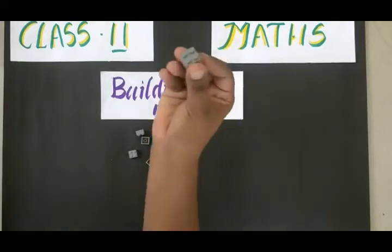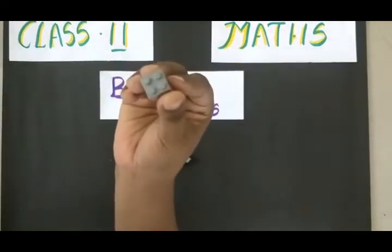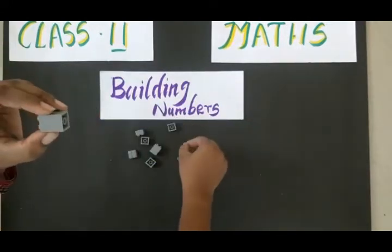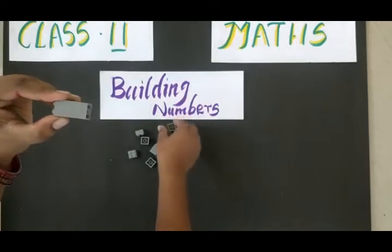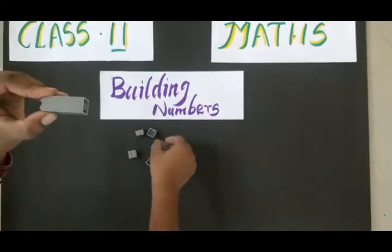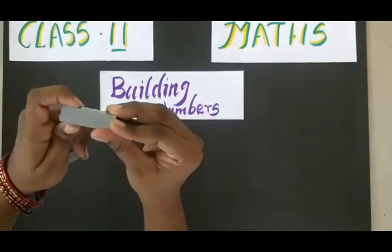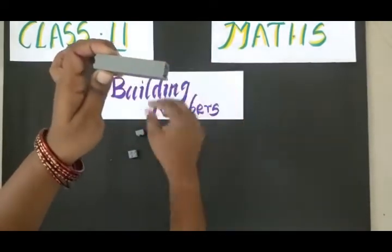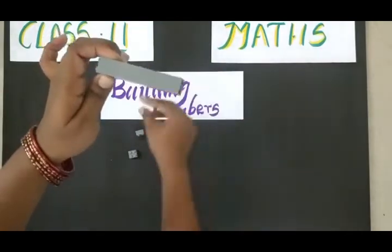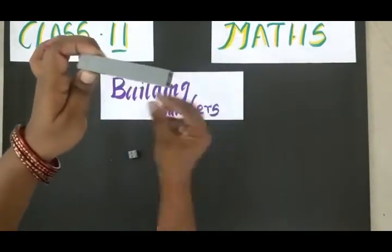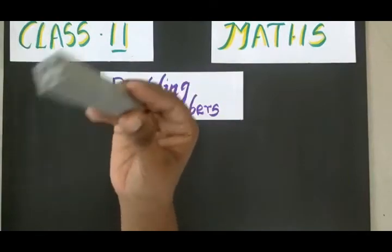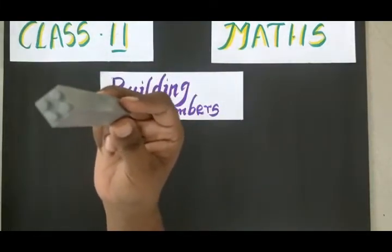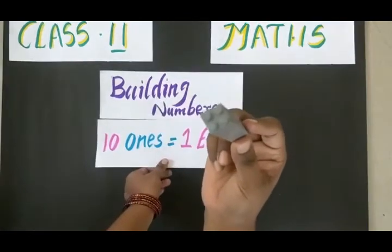Here I am having some blocks. Each block is considered as ones. So I am going to add this: one, two, three, four, five, six, seven, eight, nine, ten. So ten ones equal to one times ten.